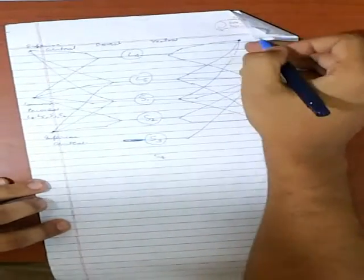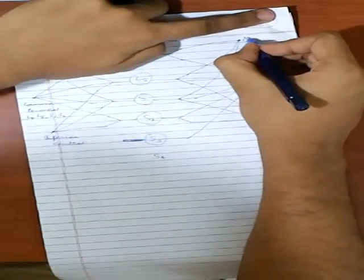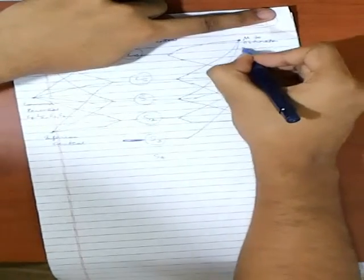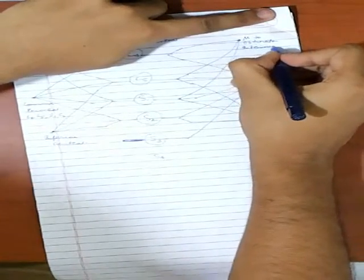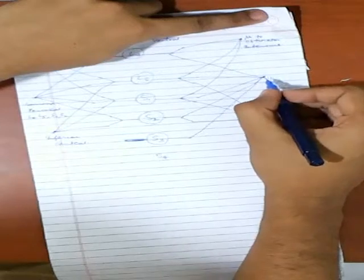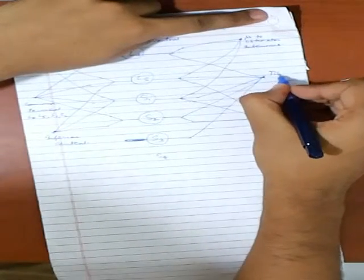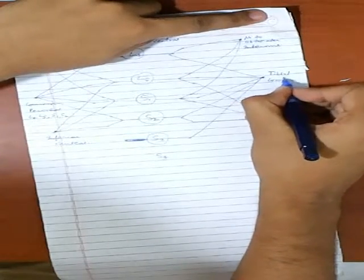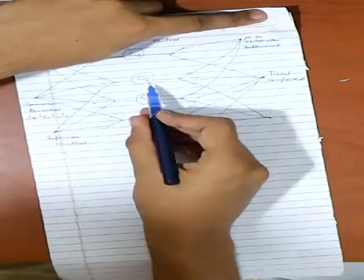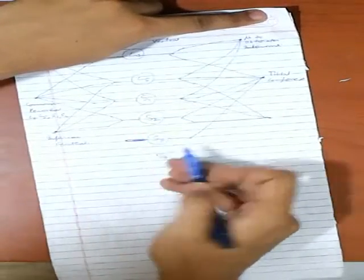This side, this will be the nerve to obturator internus. This peroneal, common peroneal of the sciatic nerve. Similarly, on this side, the tibial component of the sciatic nerve. So this will have its origin, L4, L5, S1, S2, and S3.